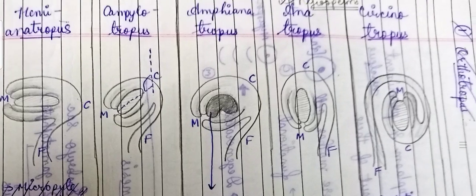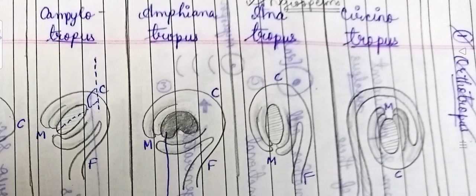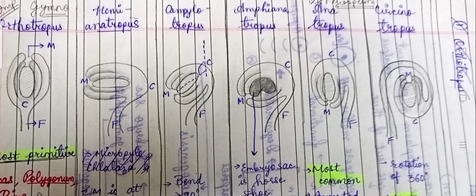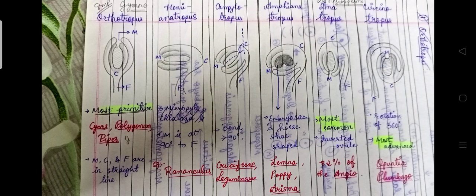The most important type — especially for Angiosperms — is anatropous. In anatropous, the micropyle and chalaza are in a reverse condition relative to the funicle; the ovule is inverted. It is the most common type, found in 82% of Angiosperms.